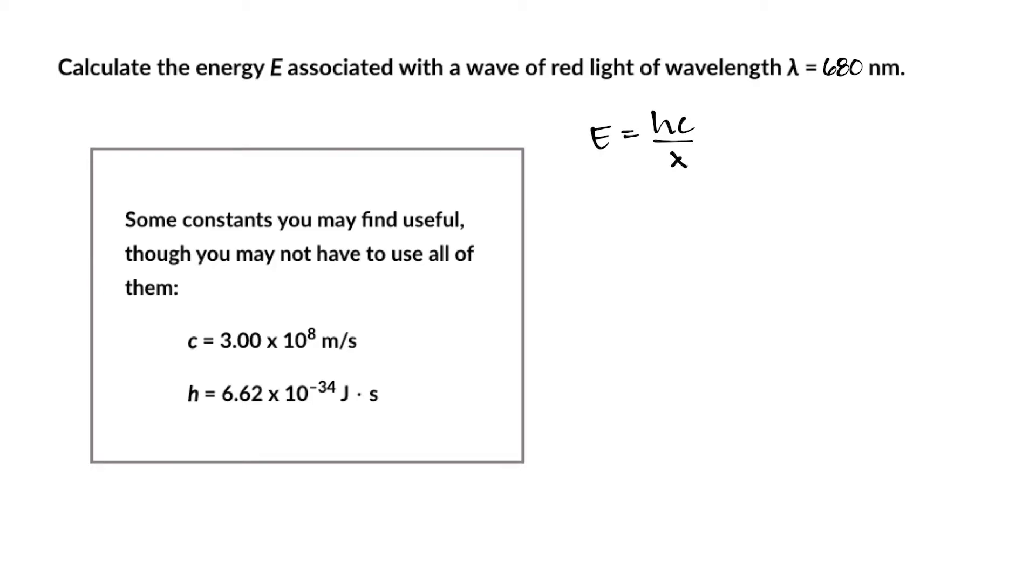One thing we can do automatically this time around is just use the shortcut for hc, which states that the variables multiplied together are equal to 1240 eV nanometers.